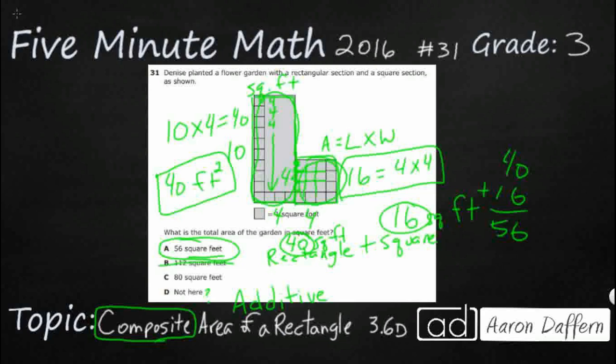So these two numbers are much too large. This 80 comes from if you did the 10 and if you did it times 8. But that includes an area that's not really there. So 80 is not good. Not here is not good. But the answer is A.